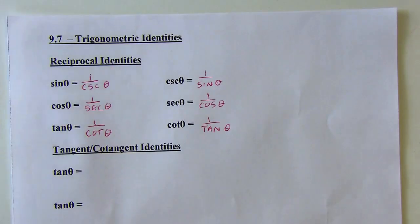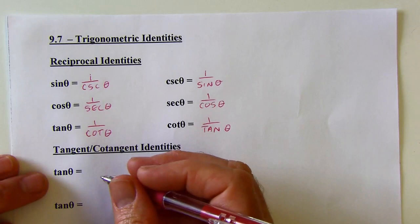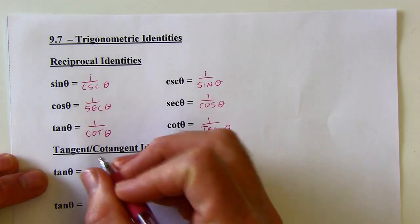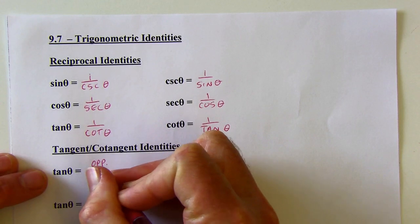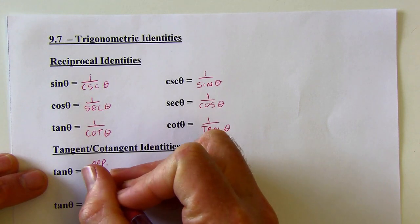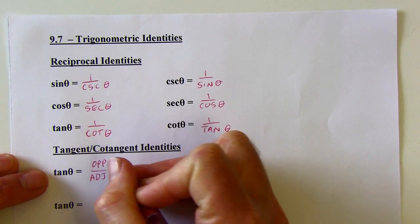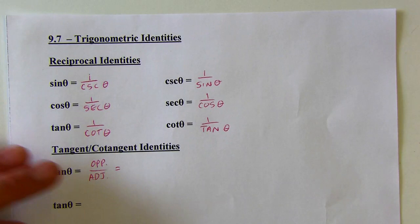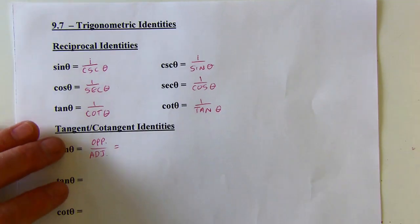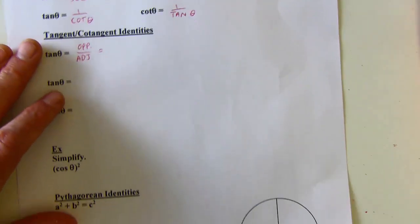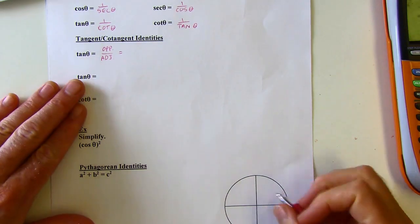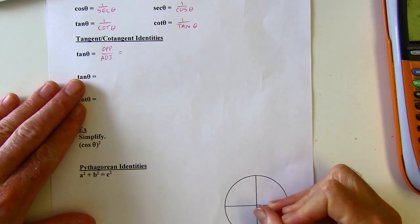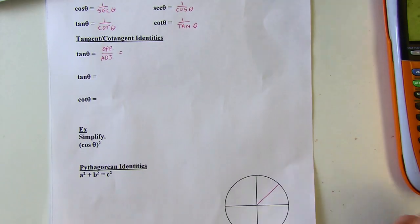I'm going to introduce some other identities, and then we'll do some problems with them a little bit later. Tangent — we've already talked about tangent. SOHCAHTOA: tangent is opposite leg over adjacent leg. But then if we're on a unit circle, let's go down to this little unit circle that I have down here, and I'm going to draw at about a 45-degree angle.